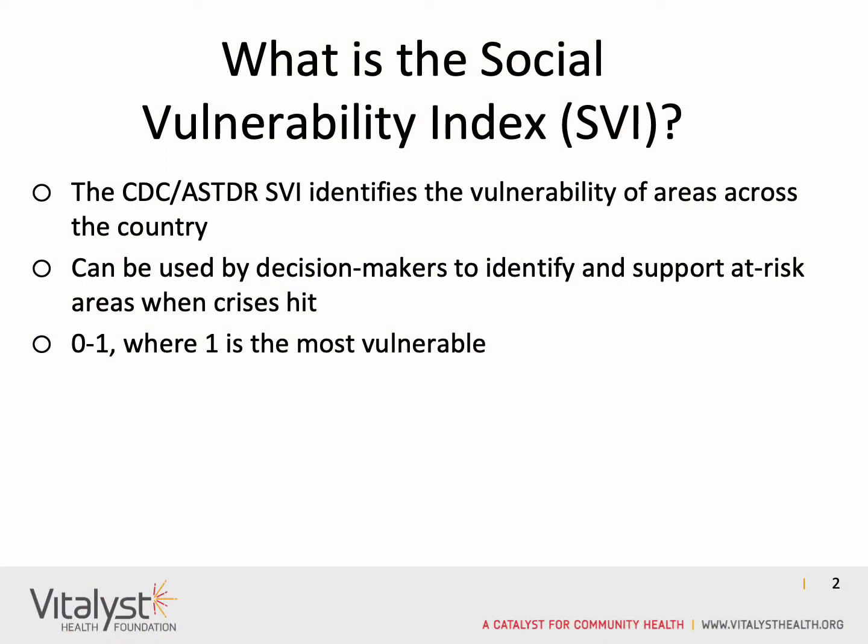So what is the Social Vulnerability Index, or SVI? It is a measure created by the Center for Disease Control and the Agency for Toxic Substances and Disease Registry, also known as ATSDR, which identifies the level of vulnerability of a community across the United States. It was first created so that decision makers could quickly identify what areas would need the most assistance when a crisis hit.